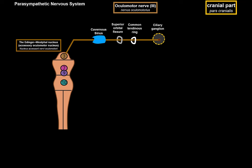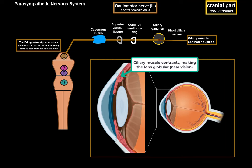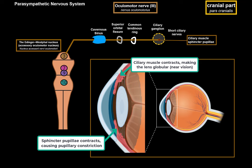From the ciliary ganglion, postganglionic parasympathetic fibers travel as short ciliary nerves towards the ciliaris muscle. When the ciliaris muscle contracts, the zonular fibers get relaxed, which allows the lens to become more globular — helping with near vision. This is an accommodation response. The other muscle it innervates is the sphincter pupillae — when it contracts, it squeezes the pupil and makes it very small, causing pupillary constriction. Constricting the pupils allows less light rays into the eye, which also has an effect on near vision.